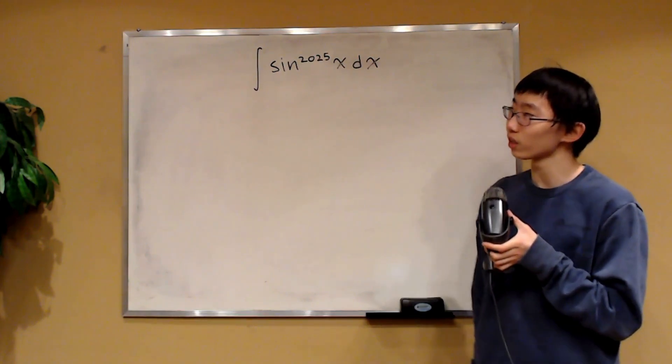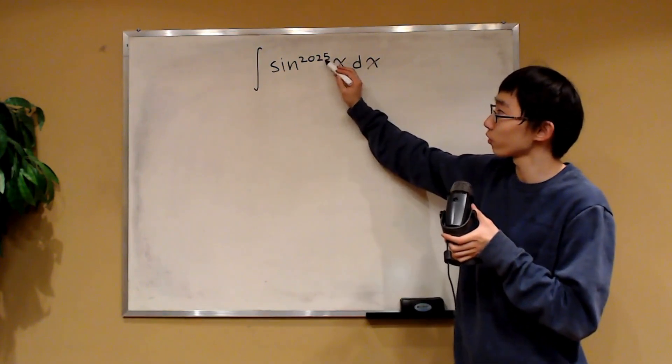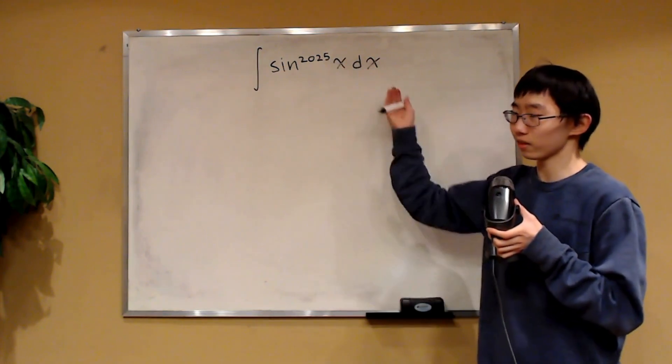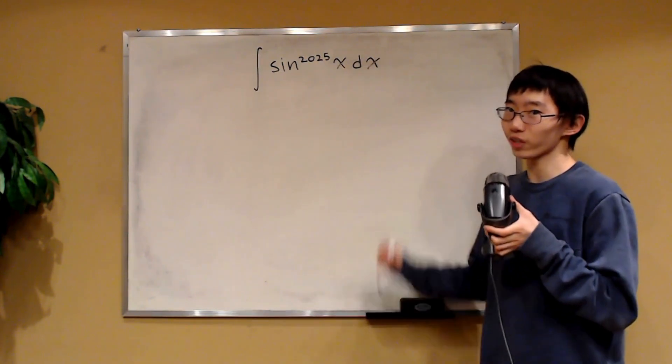The most annoying part of this integral is this huge power on sine. We have sine to the 2025 of x. Can we use some power reduction formula for this? No, that's going to take forever.